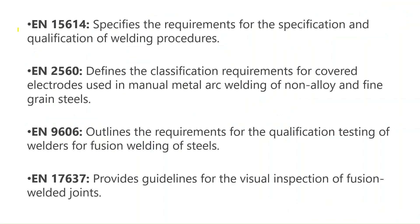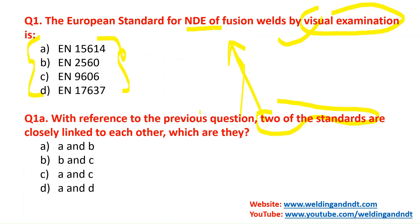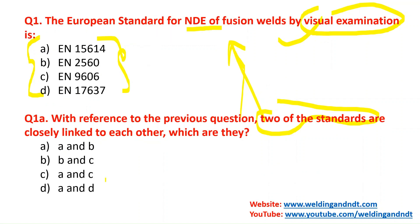Let us understand these codes. EN15614 is a standard that specifies requirements for the specification and qualification of welding procedures. EN2560 is related to covered electrodes. EN9606 is about the qualification testing of welders. And EN17637 is for visual inspection or visual examination. So the answer to the first question — which one is for visual examination — is EN17637, option D.